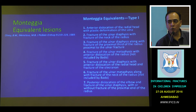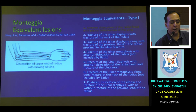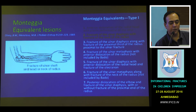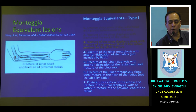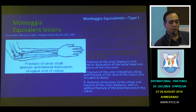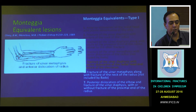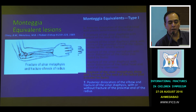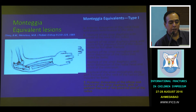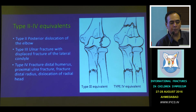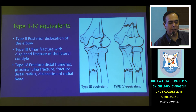There are also Monteggia equivalent lesions — fracture patterns caused by a similar mechanism of injury. These include: anterior dislocation of the radial head with plastic deformation of the ulna; fracture of the ulnar shaft with fracture of the radial neck; fracture of the ulnar shaft with proximal fracture of the radial shaft; fracture of the proximal metaphysis of the ulna with anterior dislocation; fracture of the ulnar shaft with olecranon and anterior dislocation; fracture of the proximal ulna and neck of the radius; posterior dislocation of the radial head with ulnar metaphyseal fractures; Type 2 variant with posterior dislocation of the elbow; Type 3 variant with a lateral condyle fracture; and Type 4 variant with associated distal humerus fracture.